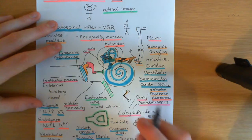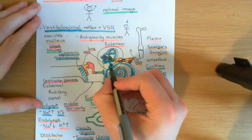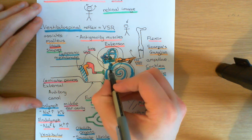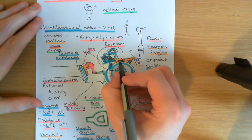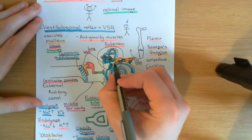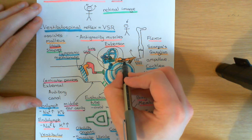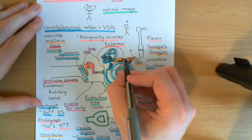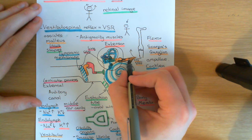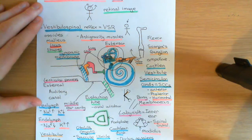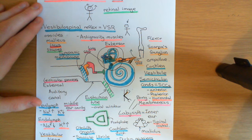For the saccular macula, the peripheral process of the bipolar neuron innervates hair cells there, and the cell body is in the inferior Scarpa's ganglion. The peripheral process runs in the inferior vestibular nerve, while the central process runs in the opposite direction, fuses with the superior vestibular nerve, goes into the full vestibular nerve, then into the vestibulocochlear nerve, and ultimately to the brain.